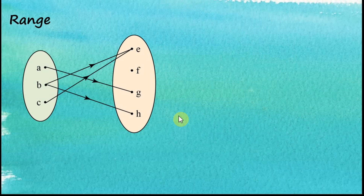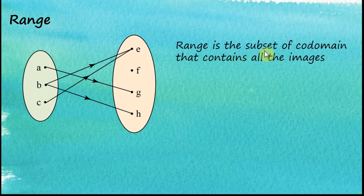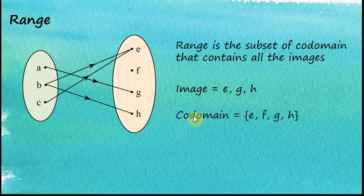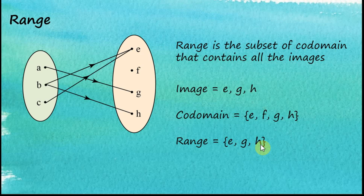Range. In a relation, the range is the subset of the co-domain that contains all the images. In this case, the images are E, G, and H, while F is not an image because it has no object. The co-domain contains E, F, G, H, but the range is only E, G, and H, because the range only consists of images. Elements in the co-domain that are not images are not in the range.